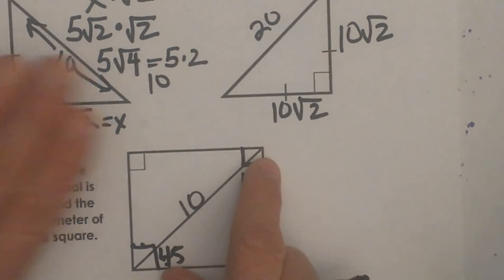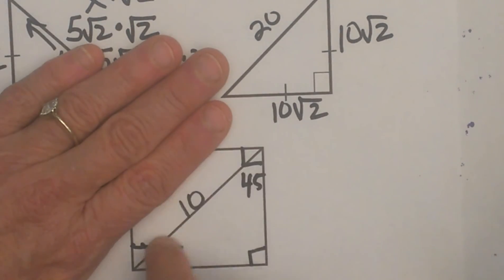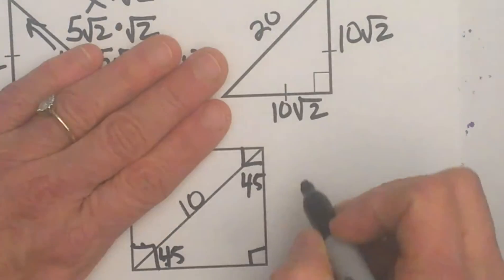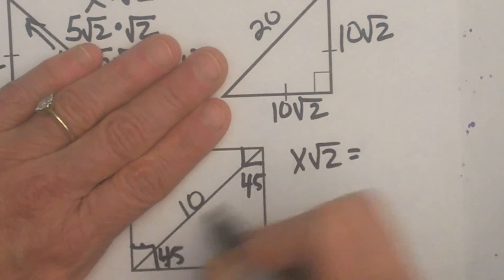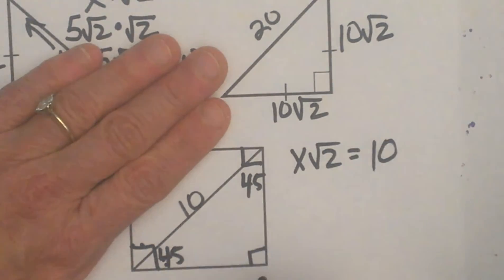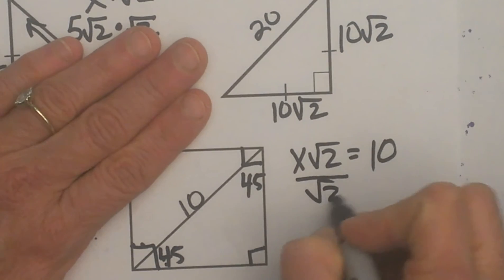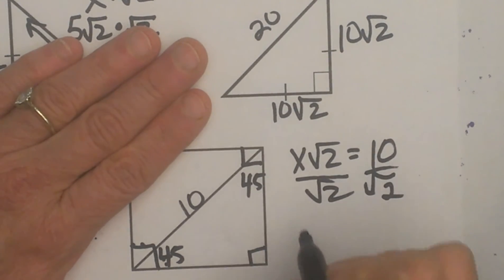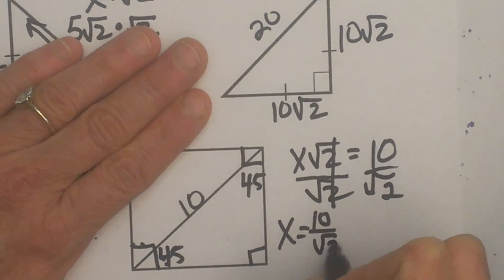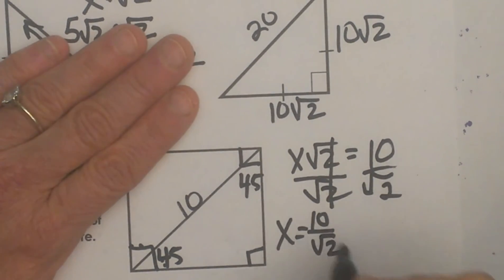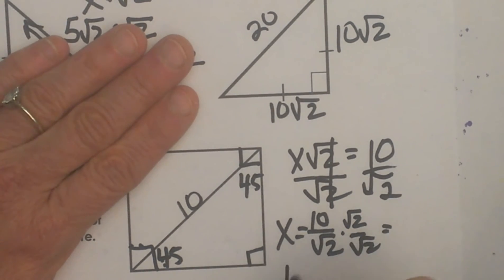If I cover up half of the square, I am given the hypotenuse. The hypotenuse equals x square root of 2, and our hypotenuse equals 10. So let's solve for x — divide both sides by the square root of 2, giving x equals 10 divided by the square root of 2. I need to rationalize that, so I multiply by root 2 over root 2, giving 10 root 2 over 2, which equals 5 root 2.